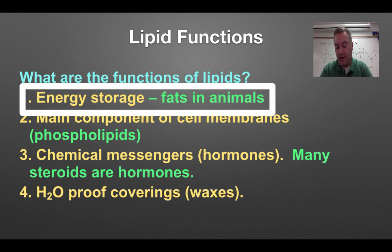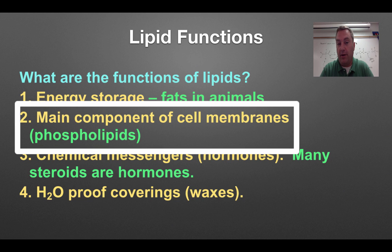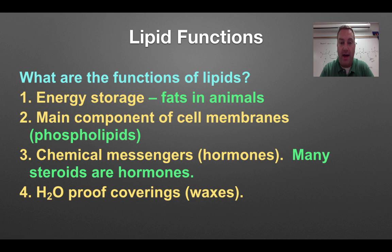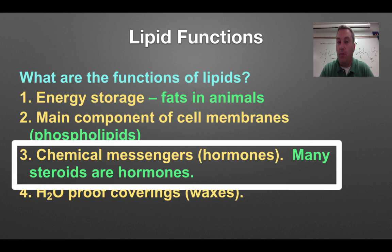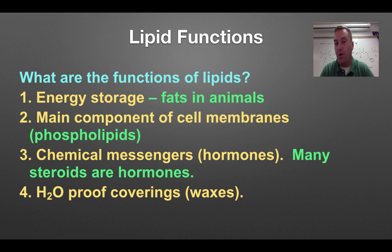The functions of lipids — there are four. Number one, they are used mainly as energy storage, especially in animals — these would be body fat in humans and other animals. They're also the main component of all plasma membranes or cell membranes, so it doesn't matter if you're in a fungus, a plant, a bacteria, or an animal — your cell membranes are made out of mainly phospholipids. Some lipids will be hormones, which are chemical messengers — these are mainly steroids, so think of testosterone in humans. And they can also be used as a waterproof covering, seen on the tops of leaves on plants and on the bodies of crabs and insects.